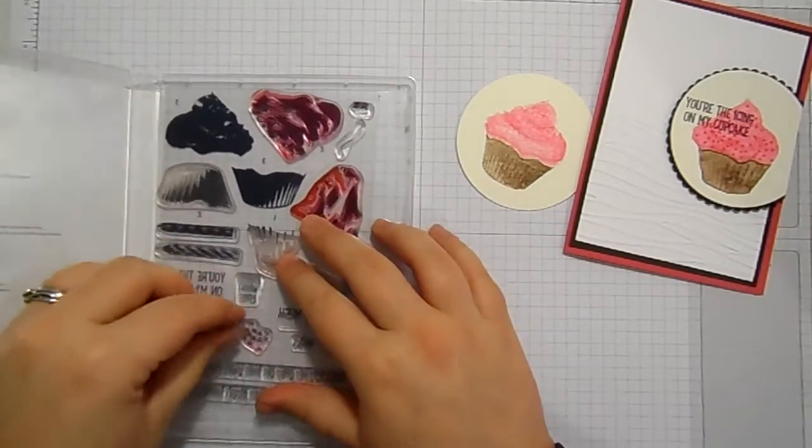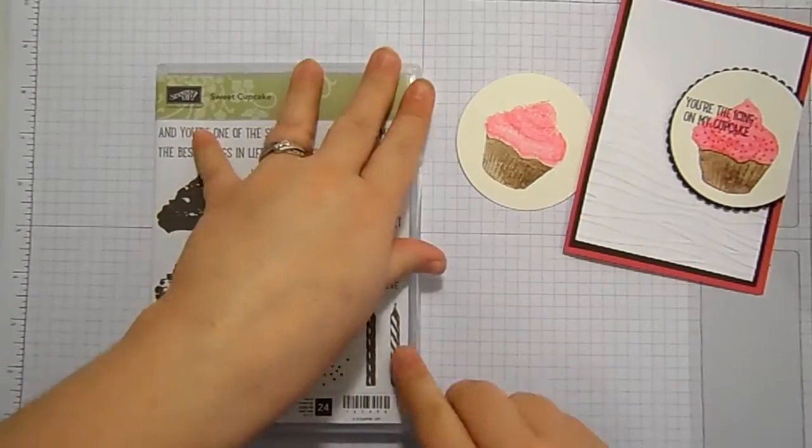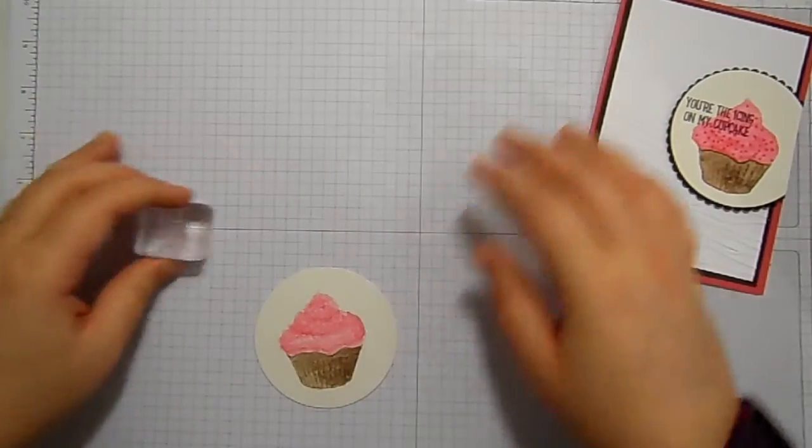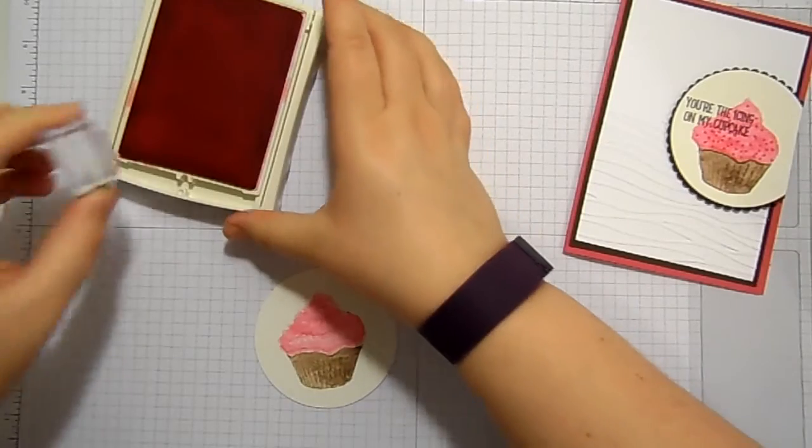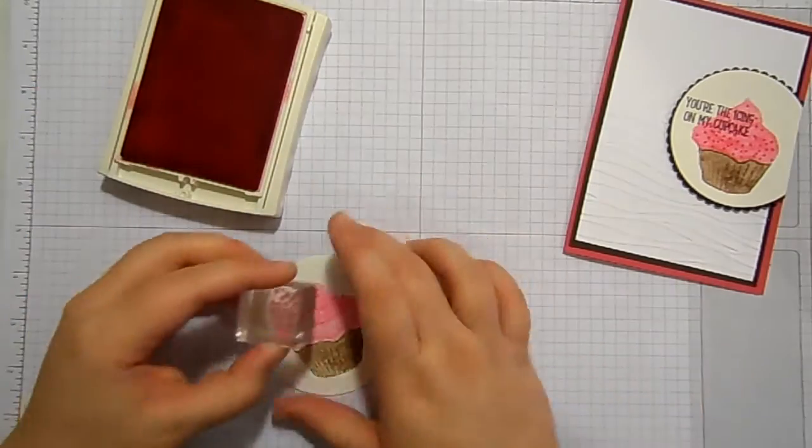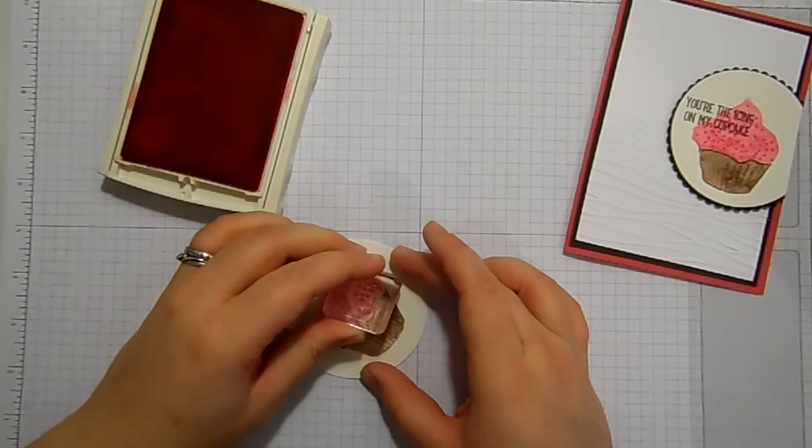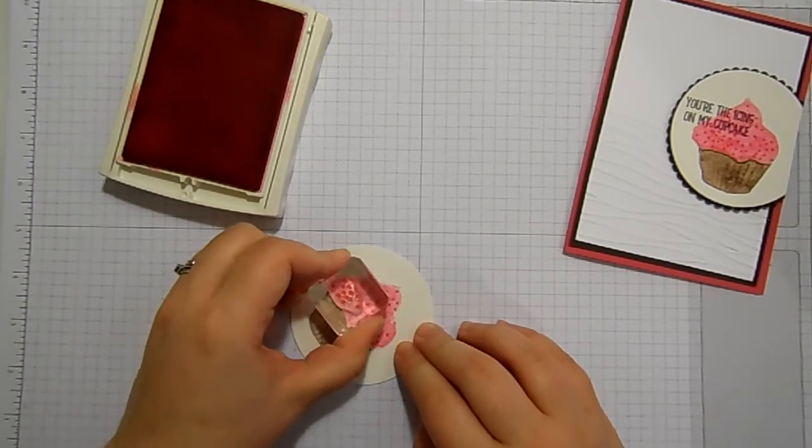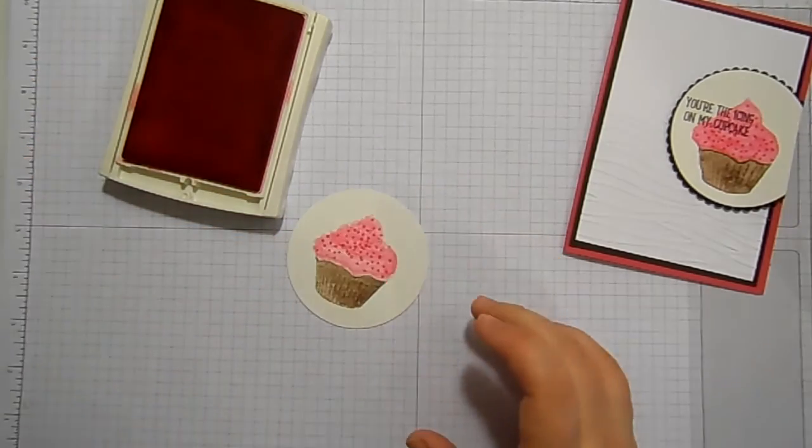And I've missed a stamp off. There is a fabulous little dotty stamp, excuse me, in this stamp set. Isn't that really cute? And it's great for adding little bits of detail on. So I'm going to take my Melon Mambo ink again, and I'm going to add some dots, just like sprinkles on the top of my cupcake.